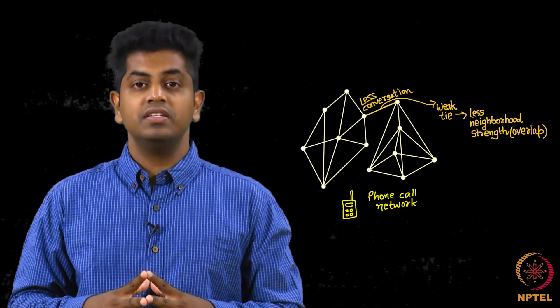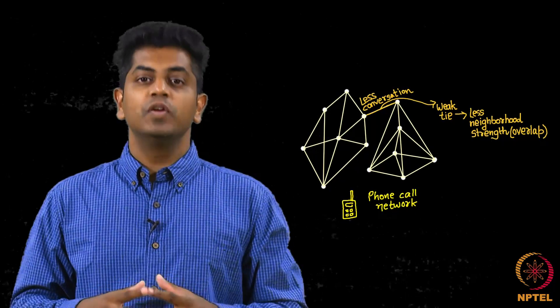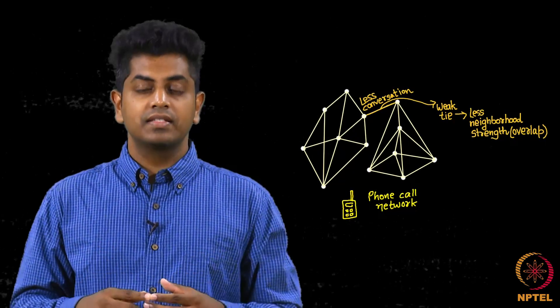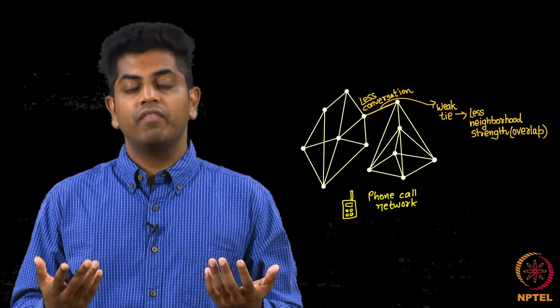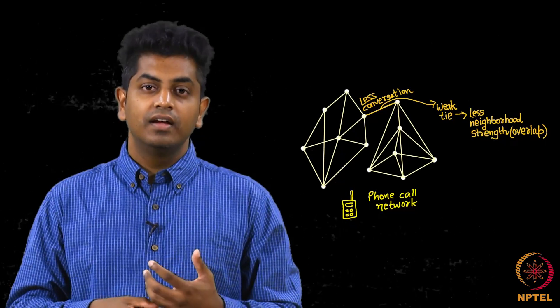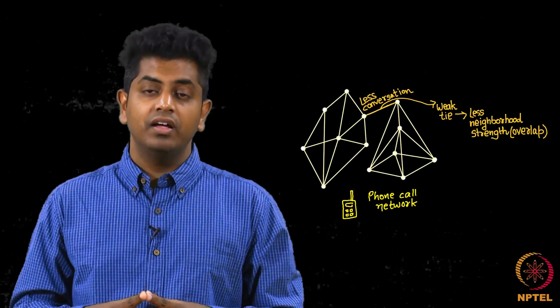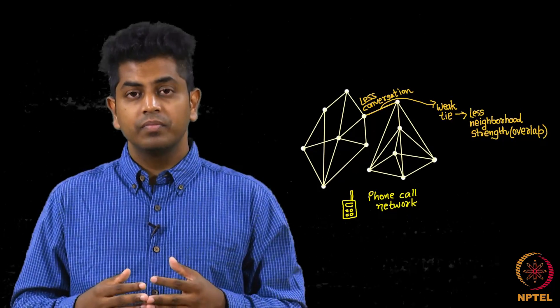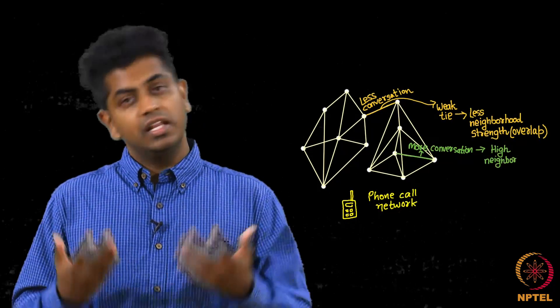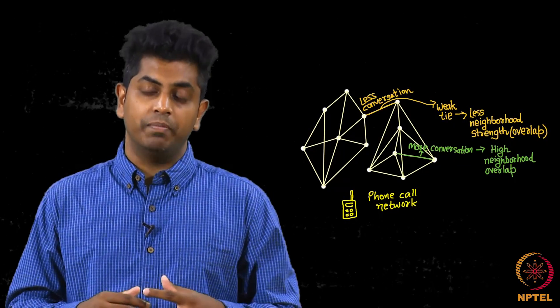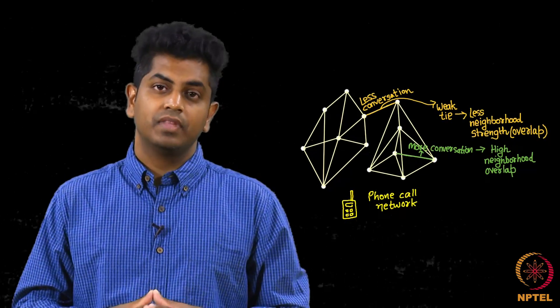What do I mean by this? It just means in a network if you look at all the links, links denote two people have had conversation on phone, and you see how much conversation they have had. You observe that more the conversation, more is the neighborhood overlap. Lesser the conversation, less is the neighborhood overlap. We saw this in detail, we made our inferences, we saw the plot as well.